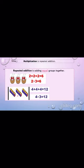Let's have another example. Here we are having three groups of four blocks. We can write it as 4 plus 4 plus 4, which equals to 12. In other words, we are having three sets of four blocks. We can write the multiplication sentence as 4 multiplied by 3 equals to 12.